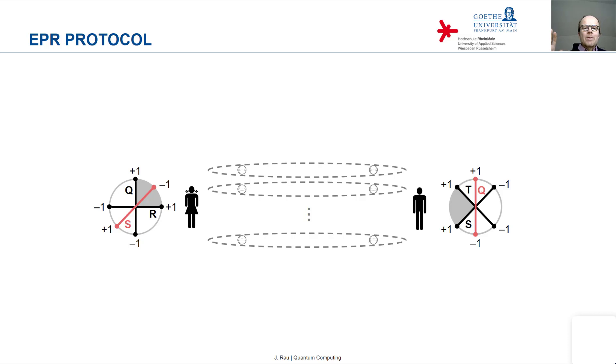So what happens, Alice and Bob perform on their members of these many Bell pairs one of the three measurements that they are allowed to make randomly and without sharing beforehand the order or which measurements they want to perform.